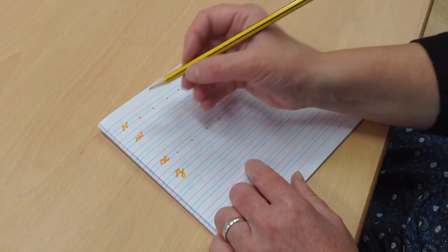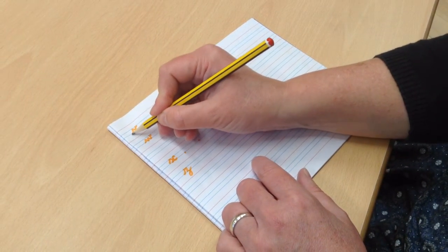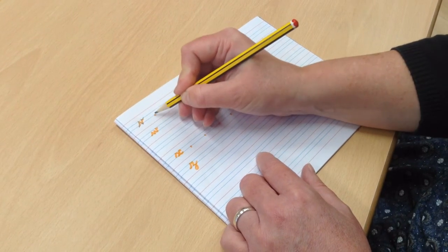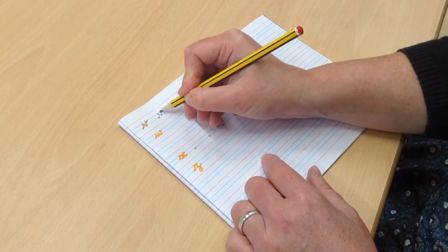When you come to write it in the book, do it exactly the same as on the board. Lead-in from the line, down, up and a flick. Lead-in, down, up and a flick.